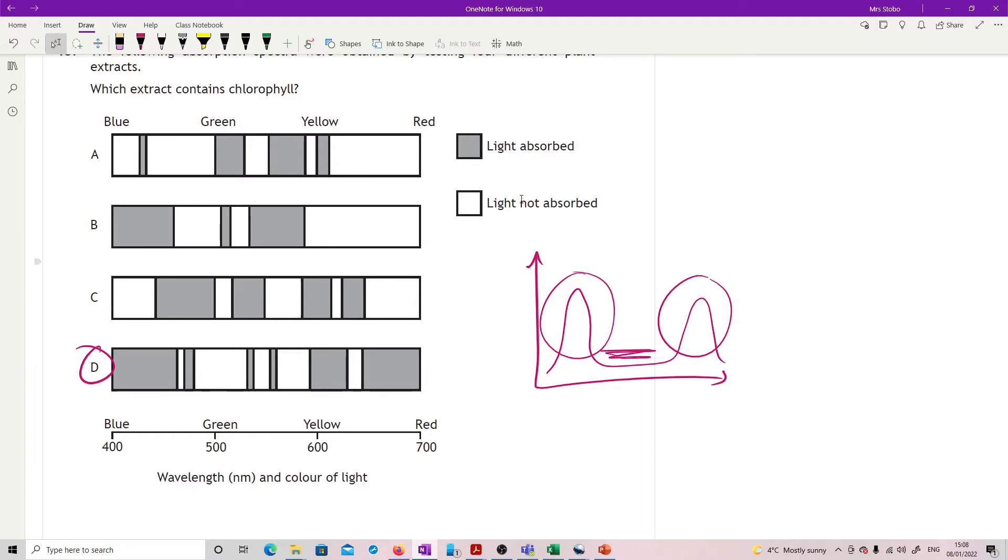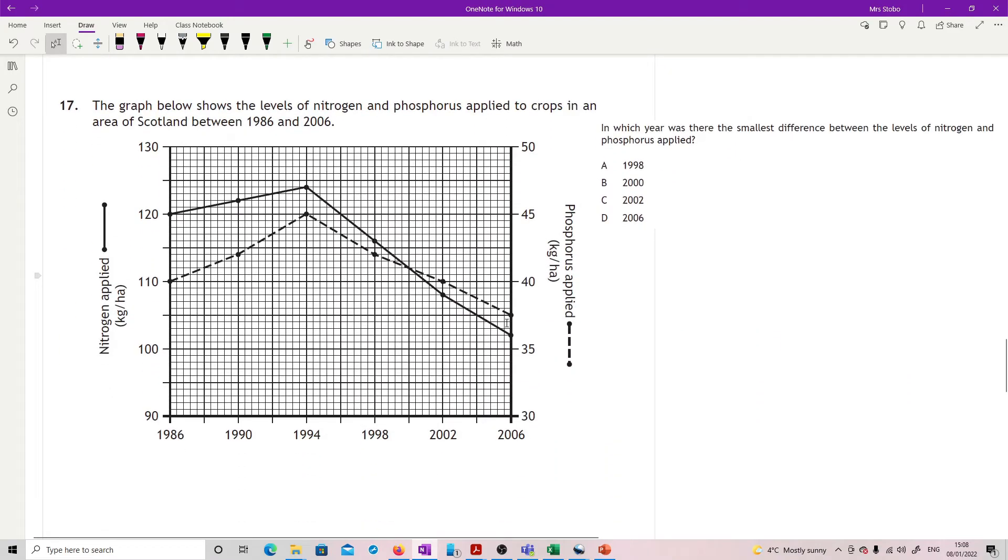Question 17: The graph below shows the levels of nitrogen and phosphorus applied to crops in an area of Scotland between 1986 and 2006. In which year was the smallest difference between the levels of nitrogen and phosphorus applied? The only thing that makes this tricky is the fact that we have a double axis graph with different scales. The nitrogen is on this scale and the phosphorus is on this scale, so you've just got to do the numbers. So 1998, 2000, 2002, and 2006.